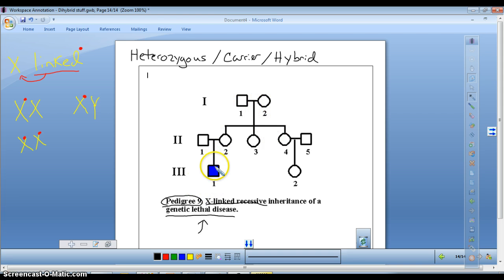Right. So, here you have a child. This is a boy or a girl? It's a boy, right? Squares are boys. Generation one. Generation two. And generation three.